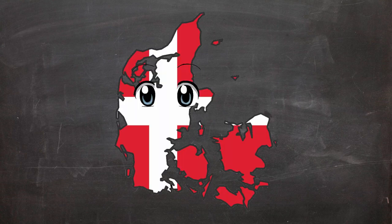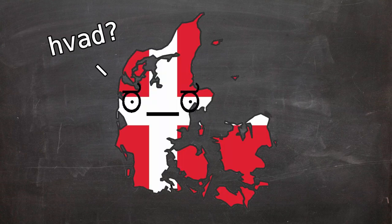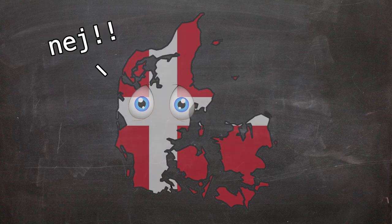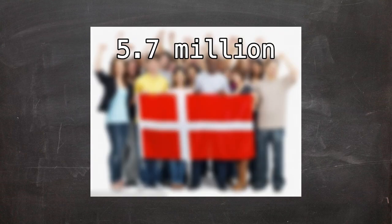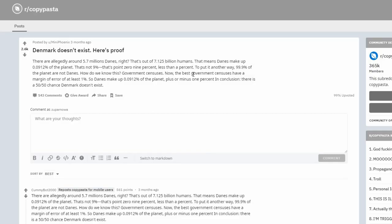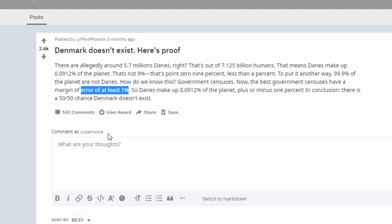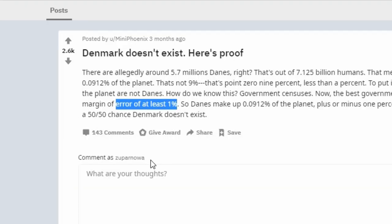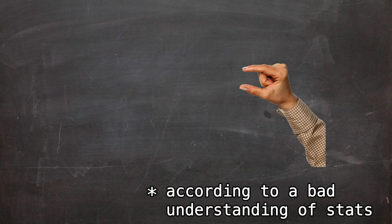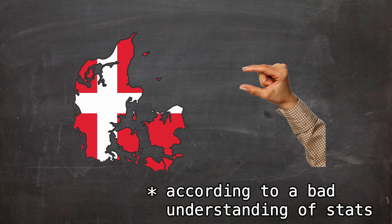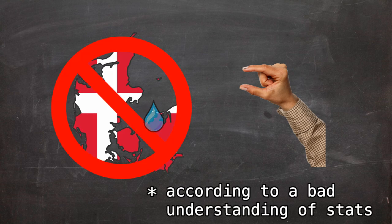The idea that Denmark doesn't exist is born from the idea that because there are about 5.7 million Danes — 0.0912% of the planet — and most government censuses have at least a 1% margin of error (citation needed), there is a chance, according to statistics, that Denmark does not exist.